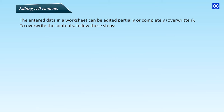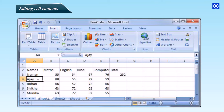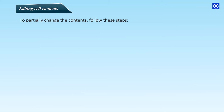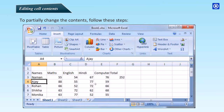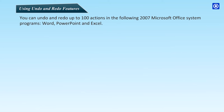Editing cell contents: the entered data in a worksheet can be edited partially or completely overwritten. To override the contents, select the cell to be edited, type the new contents, and press Enter or click in the formula bar. To partially change the contents, select the cell, then press F2 or click in the formula bar, or double-click in the cell. Using the cursor that appears, change the contents and press Enter.